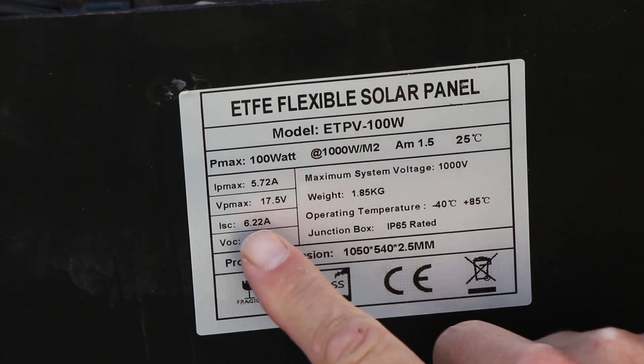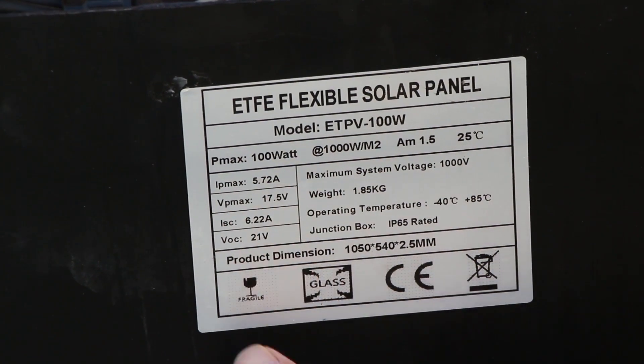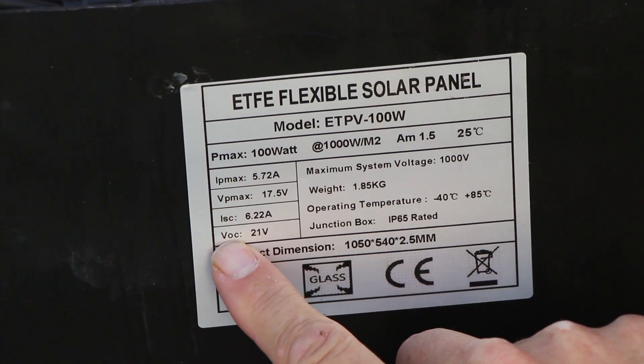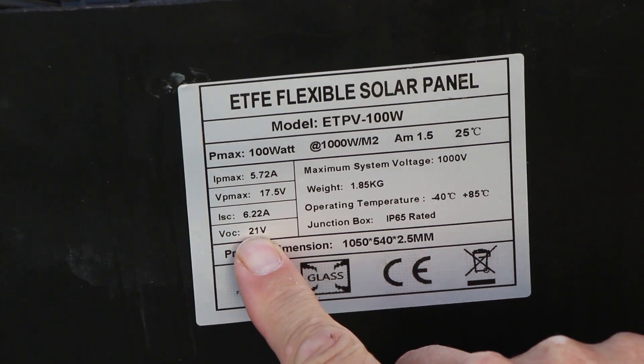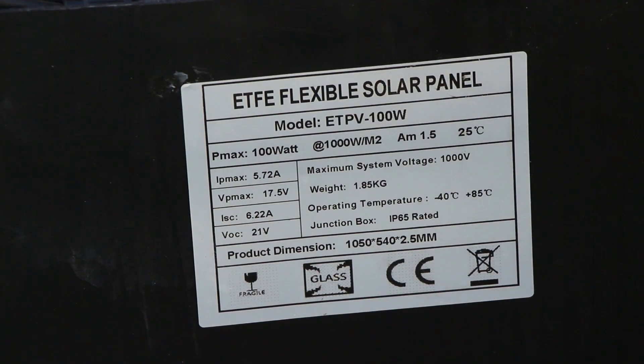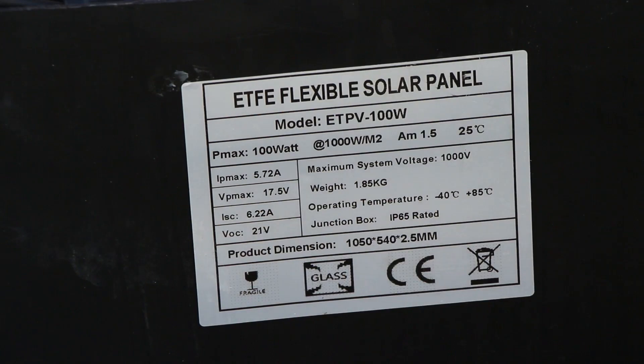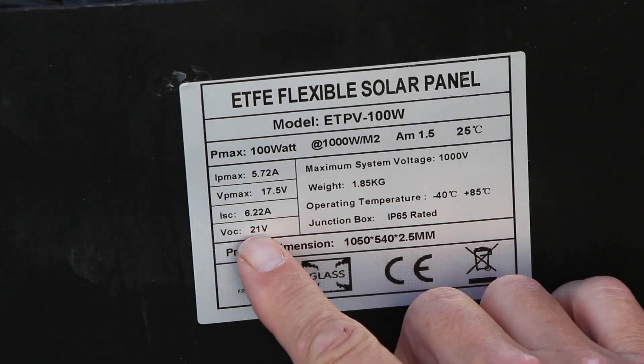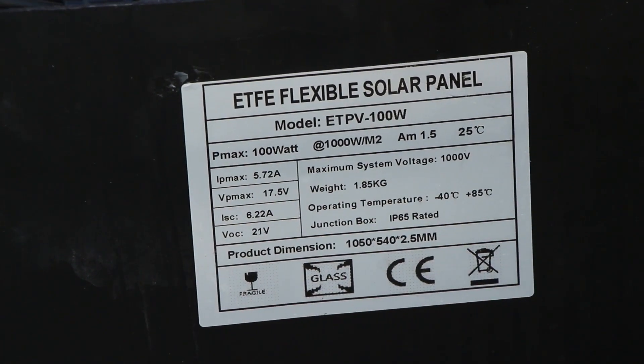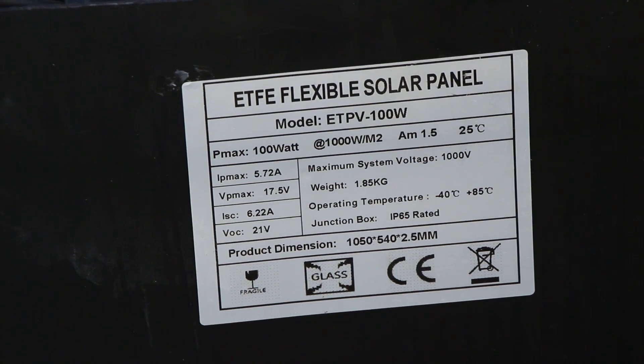Okay, so this is the back of the panel and the rating for this panel, what we need to look at is the VOC which is currently 21 volts. So that's the most voltage we'll create out of this panel, so if we have two in parallel we'll stay at 21 volts, which is under the 35 volts we need for the Titan solar generator.